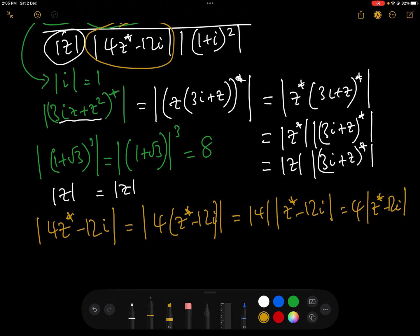and finally, we are left with modulus of 1 plus i squared, which again is a fairly simple one. 1 plus i squared, modulus of 1 plus i squared. By the modulus rule 3 is the same as modulus of 1 plus i squared, which is 1 plus i has a modulus of root 2. Root 2 squared is 2.